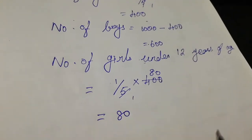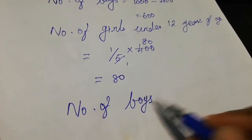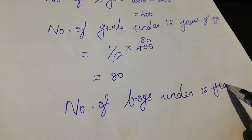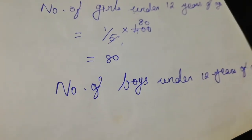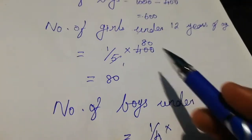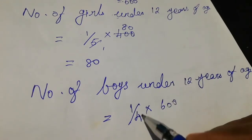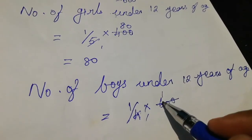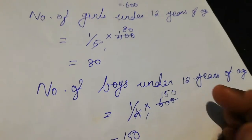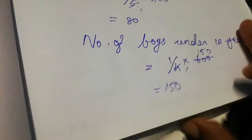Now, one-fourth of the boys are under 12 years of age. That is 1/4 of the total number of boys, which is 600. So 1/4 into 600 — dividing 600 by 4 gives 150. So 150 boys are under 12 years of age.